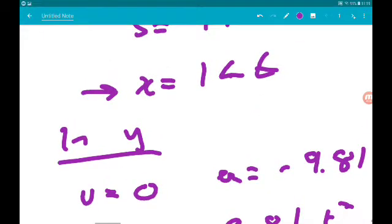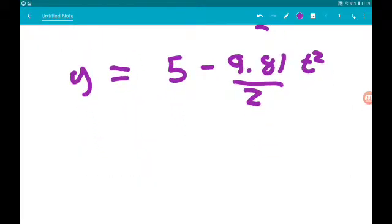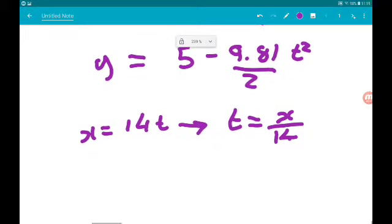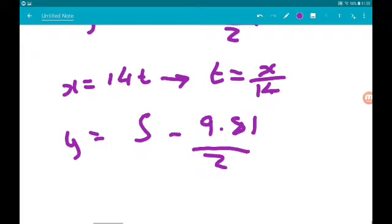So we know that x is 14t, which tells us t is x over 14. So we can say then that y is 5 minus 9.81 over 2 times x over 14 all squared.